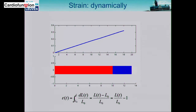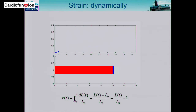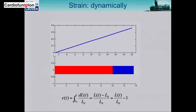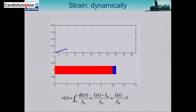In the heart, we don't necessarily want to express strain only at the end of the deformation process — we may want to express it at every time point during deformation. So we can express strain dynamically using the same expression, where the length becomes the instantaneous length L(t). As the myocardium is changing shape, we can instantaneously express the amount of strain relative to the original length. In this example, we go from no strain at the beginning to 0.4, which would be 40%.